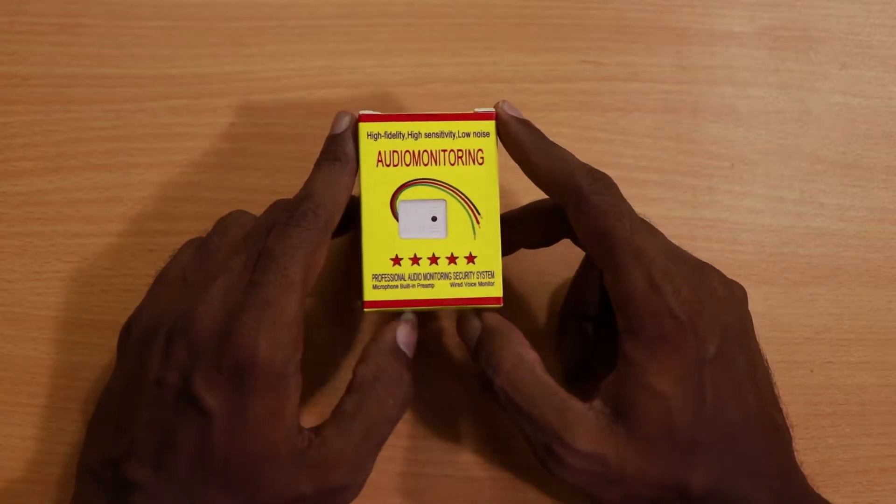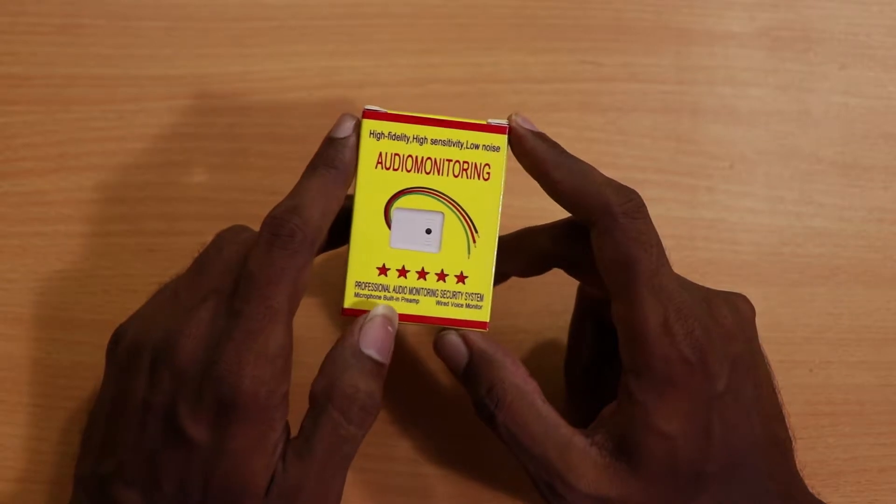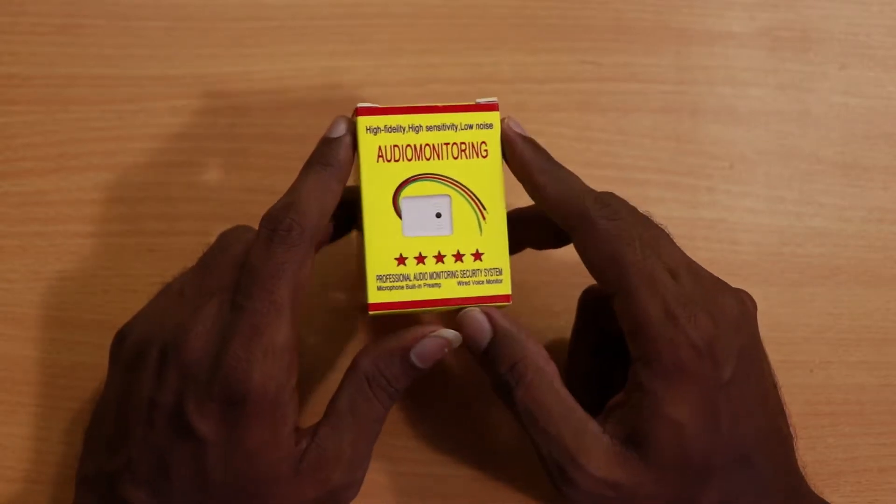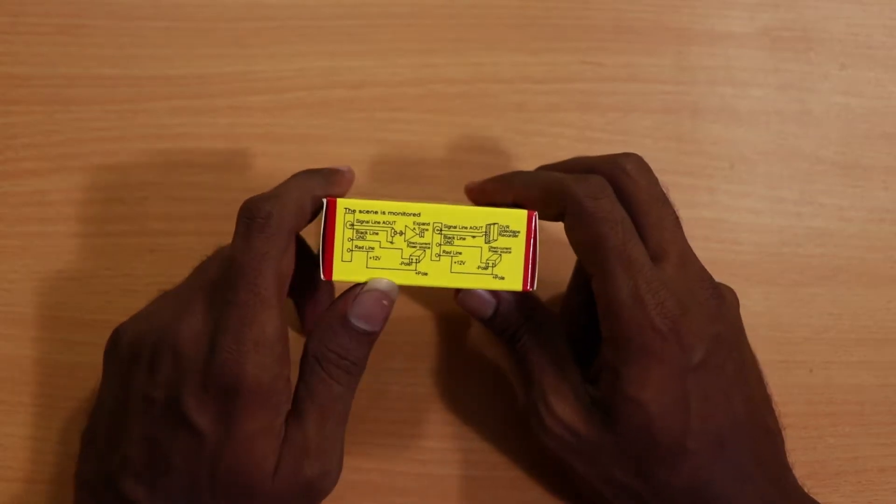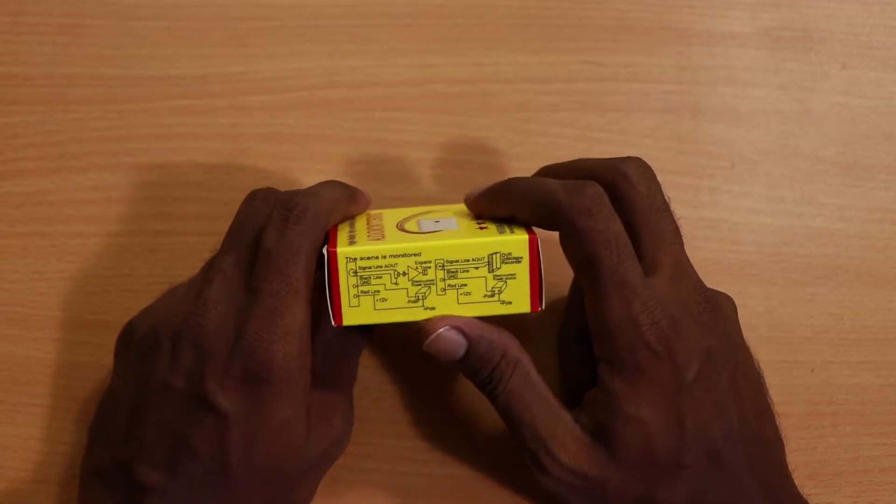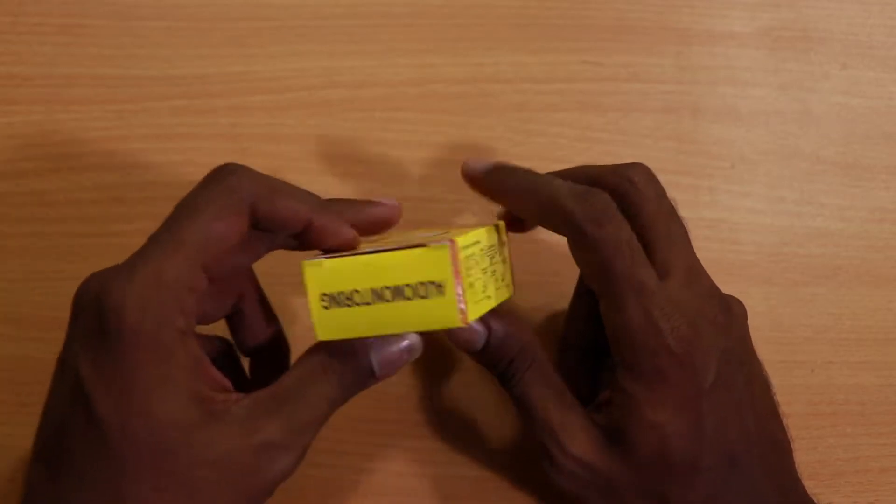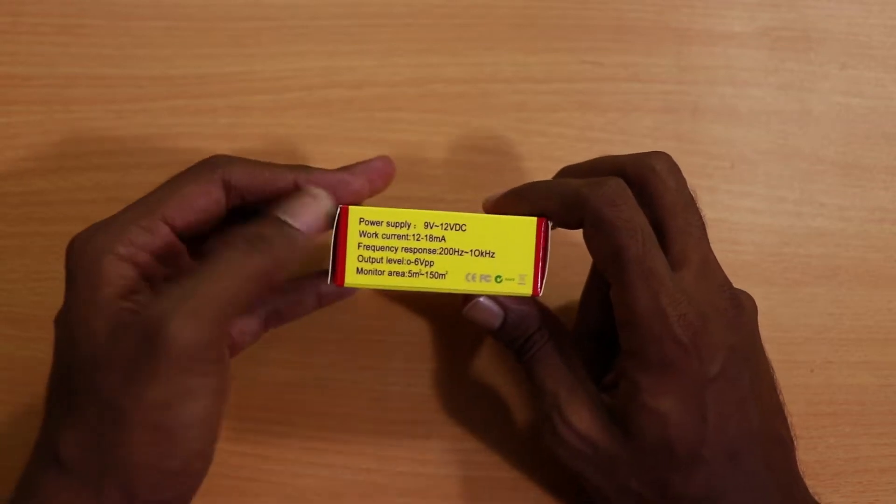Professional audio monitoring security system microphone, built-in preamp. Okay, so let's take a look at this side. Here we can see the circuit diagram. I think this must be the circuit diagram for the mic, and looking at the other side...